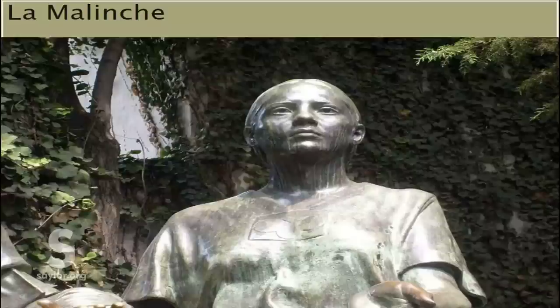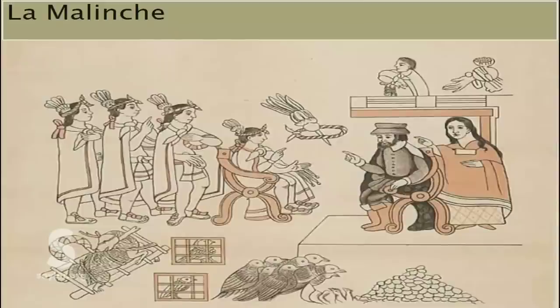La Malinche knew Aztec and Maya languages and quickly learned Spanish, which enabled Cortes to communicate with a large number of different indigenous tribes. It was thanks to La Malinche that Cortes learned from the native Tabascan tribes about a great and rich inland empire — the Aztecs.